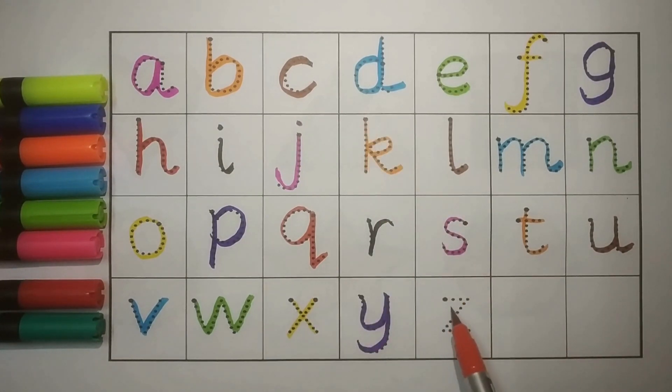And Red Z, Z for Zero Shunya. Here we have learnt our small ABCD. Let's revise, let's revise.